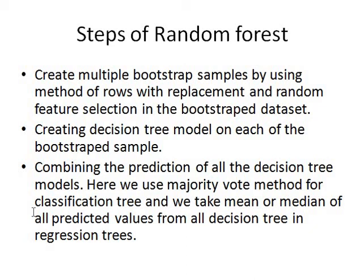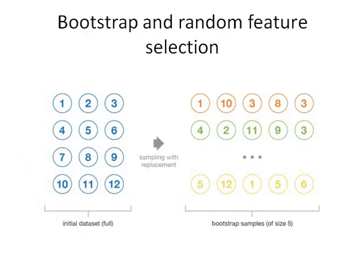Finally, in the third step, we combine the predictions of all decision trees, just like Bagging. When there is a classification problem, we use Majority Voting as our combining technique. And when there is a regression problem, we take the mean or median of our predicted values.